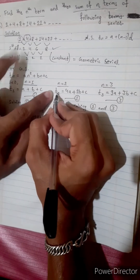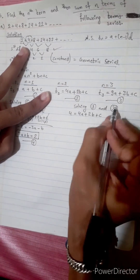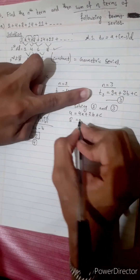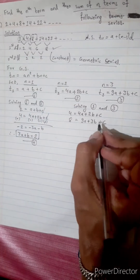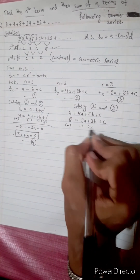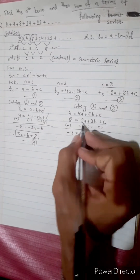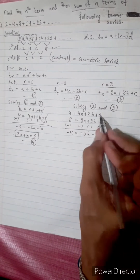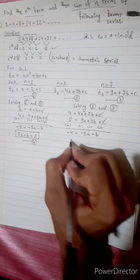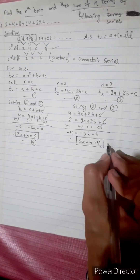Equation 2: t2 = 4 equals 4a plus 2b plus c. Equation 3: t3 = 8 equals 9a plus 3b plus c. Subtracting Equation 2 from Equation 3: 8 minus 4 gives 5a plus b equals 4. This is Equation 5.